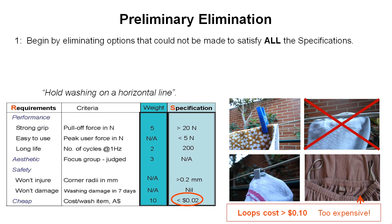Looking at another option, we might find that adding loops to all of our clothes would result in an increased cost — maybe greater than 10 cents. So it's not going to meet our specification of less than 2 cents per item, and we think that's going to be too expensive, so we'll also eliminate that one.